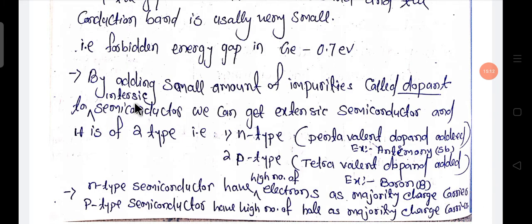Now, by adding a small amount of impurities called dopants to an intrinsic semiconductor — what is an intrinsic semiconductor? The pure semiconductor: only silicon or only germanium material is present. That pure semiconductor is called an intrinsic semiconductor. But when we add impurities, which are called dopants, that semiconductor is called an extrinsic semiconductor.